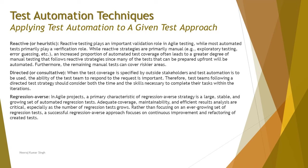The last approach is the Regression Averse approach, where significant regression testing occurs — especially in products with continuous integration. In agile projects, primary characteristics of this strategy include a large, stable, and growing set of automated regression tests. Adequate coverage, maintainability, and efficient results analysis are critical as regression tests grow. A successful regression averse approach focuses on continuous improvement and refactoring of the created tests.